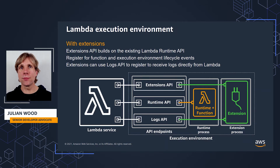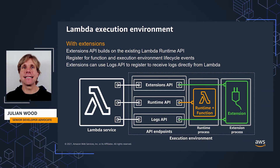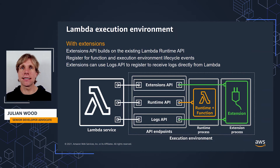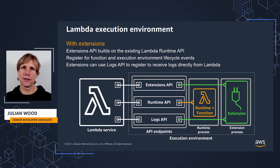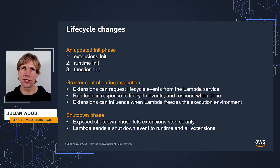With Extensions, we're introducing the Extensions API, which builds on the existing Runtime API. Extension authors can use the Extensions API to register for function and execution environment lifecycle events, such as invoke and shutdown. In response to these events, extensions can start new processes or run logic. Extensions can also use the Logs API to register for and receive logs directly from Lambda without having to go via CloudWatch Logs.